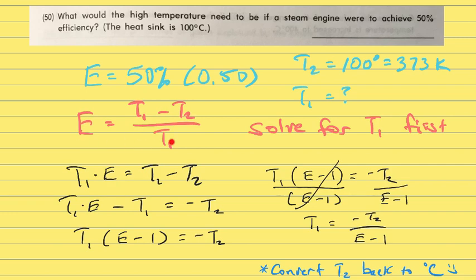So I'm going to take this equation and multiply both sides of the equation times T1. And so we get this. That eliminates the T1 as the denominator and gives us just T1 minus T2. On the other side now, I have T1 times the efficiency.